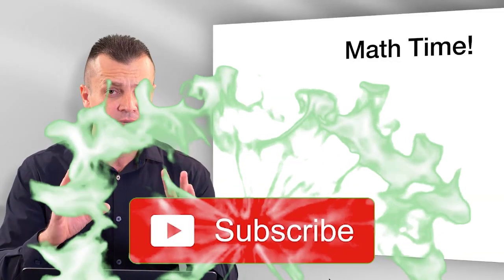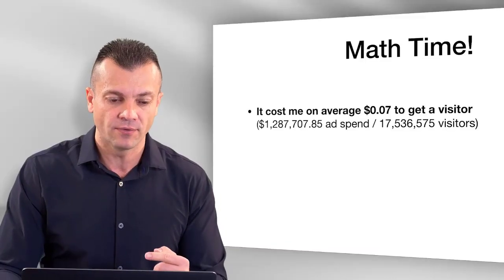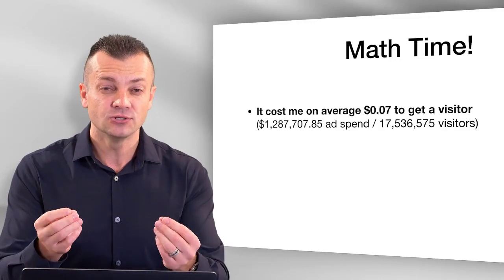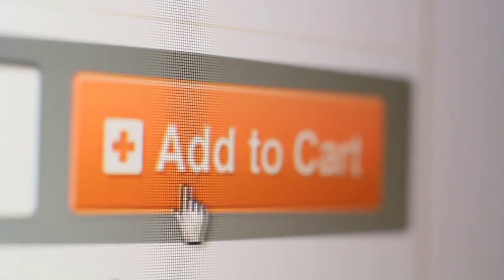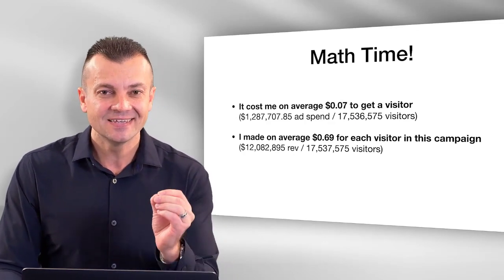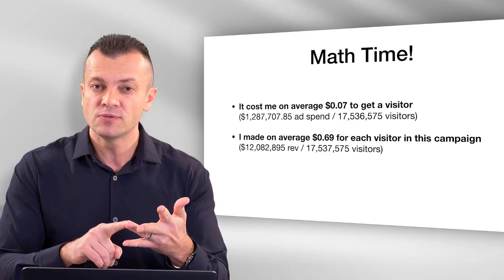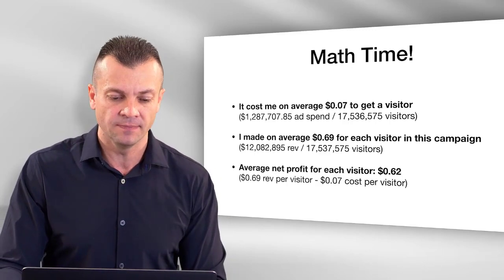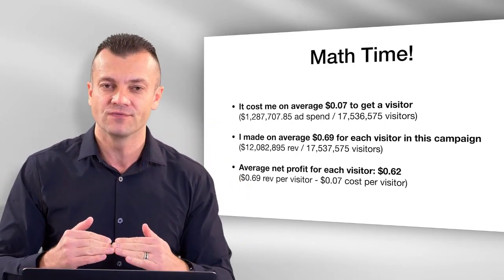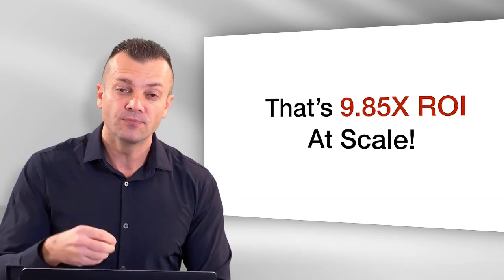I don't want to scare you — I'm not expecting you to put in a million dollars. Let me simplify this with math. It cost me on average seven cents to get a visitor. I made on average 69 cents for every visitor — regardless of whether they opted in or engaged. Every single visitor was worth 69 cents to me. My average profit after expenses was 62 cents per visitor. I paid seven cents and made 69 cents — that's the power of the data aggregation model.